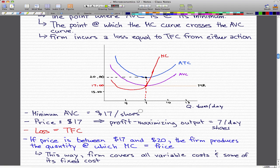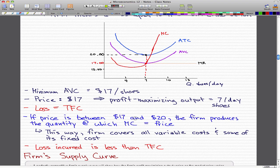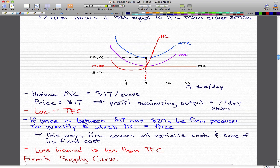If our price is between $17 and $20, then the firm will produce the quantity at which the marginal cost equals price. This way, the firm covers all variable costs and also covers some of its fixed costs, so the loss incurred in this case will be less than the total fixed cost.